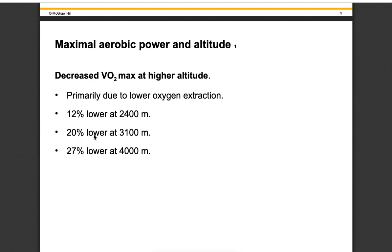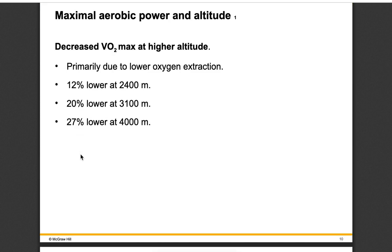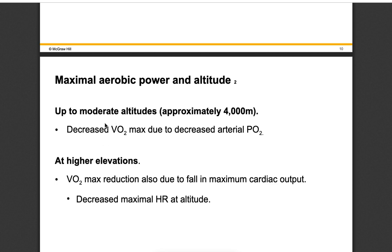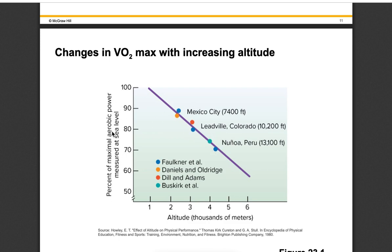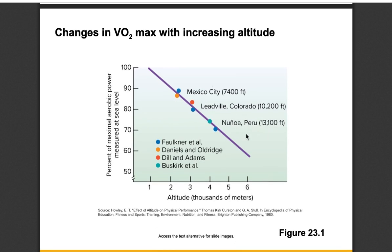As you go up in altitude, we see a decrease in VO2 max - a 12% loss at around 2,400 meters, 20% at 3,100 meters, and over a quarter loss at 4,000 meters. Moderate altitude is considered up to about 4,000 meters, anything over that is high altitude. The main reason VO2 max decreases is the lower partial pressure of oxygen. At higher elevations like Mount Everest, VO2 max reduction is also due to cardiac output not keeping up - there's a decrease in maximal heart rate at higher altitudes. Percent of maximal aerobic power decreases linearly as altitude increases, affecting even notable elevation cities like Leadville, Colorado, where Olympic athletes sometimes train.